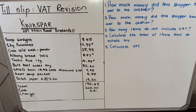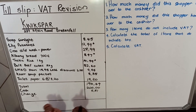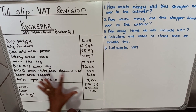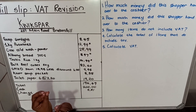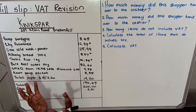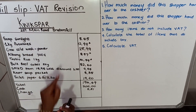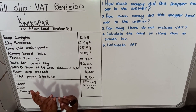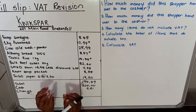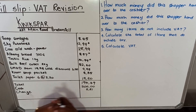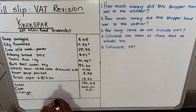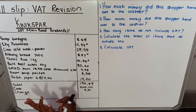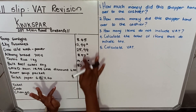Hello everyone, this is a lesson on till slips and we're going to revise that. Here I have drawn an example of a till slip so that it's big enough. This person has bought at QuickSpa, and they'll have the address, phone numbers for the shop, and also the name of the person who was serving you. Here are the items that they bought and the prices.